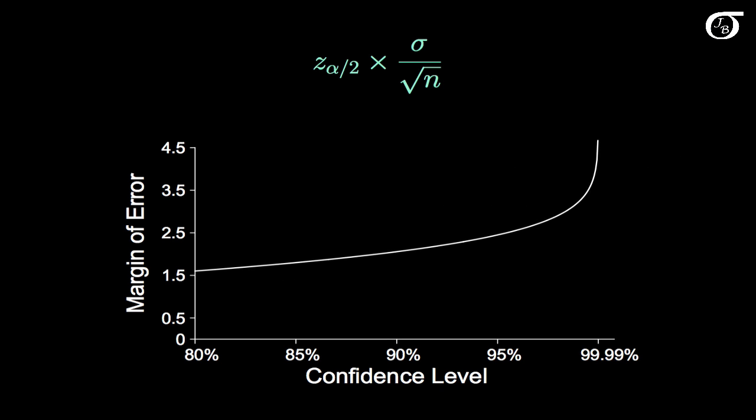What about the effect of the confidence level on the margin of error? The confidence level is tied in with this z value. And as we've learned previously, for a 95% confidence level, the appropriate z value is 1.960. For a 99% confidence level, the appropriate z value is 2.576.